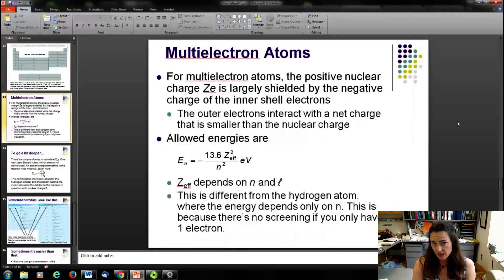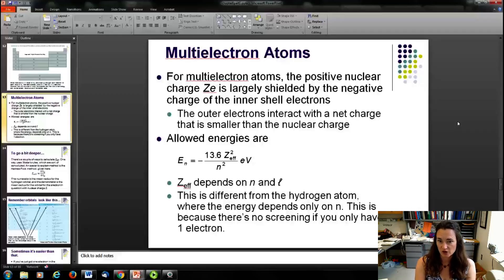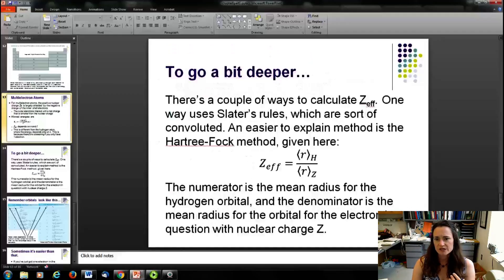To discuss screening just a little bit more, for multi-electron atoms, your positive nuclear charge Ze is going to be shielded by the negative charge of those inner shell electrons. So your outer shell electrons see a net charge that's smaller than your nuclear charge. This is described by this equation here. Instead of the equation for the hydrogen atom electron energy, which, if you remember, was minus 13.6 eV divided by n squared. Now, if you've got more than one electron, then your equation becomes minus 13.6 eV times your effective charge, Z effective, of your nucleus, and then you square that, and then you divide by n squared. Now, your effective nuclear charge can depend, as a function, on your energy level n, that n quantum number, and your orbital quantum number l. So this is different from the hydrogen atom, where the energy only depends upon the energy level. And this is because, of course, there's no screening if you only have one electron.